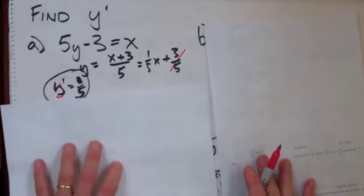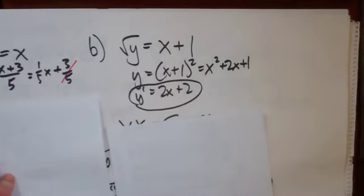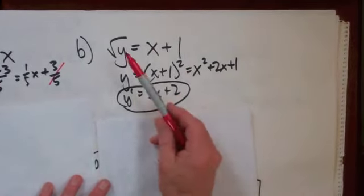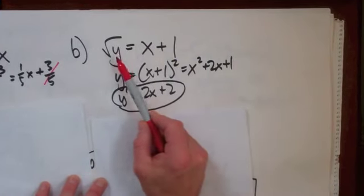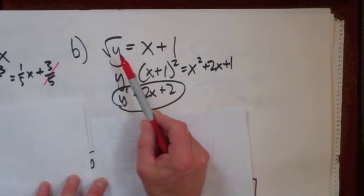Alright, B then, similar only different. We've got radical Y is equal to X plus 1. If I square both sides, again I can get Y by itself, no need to use implicit.